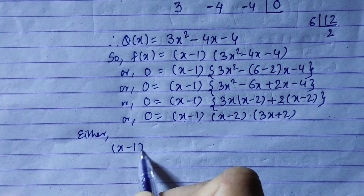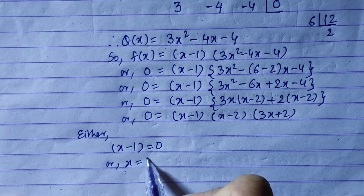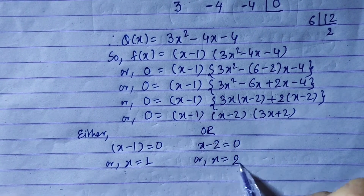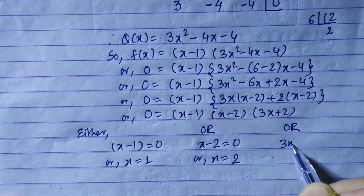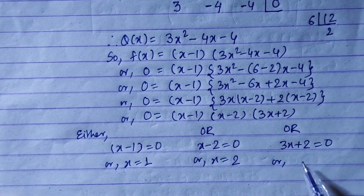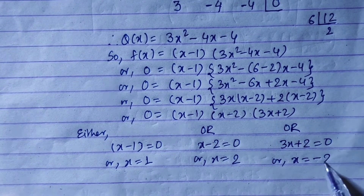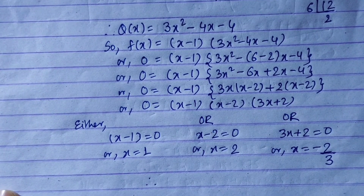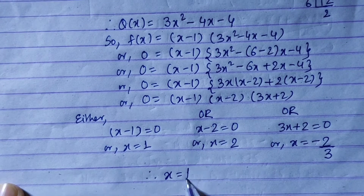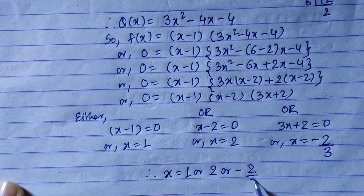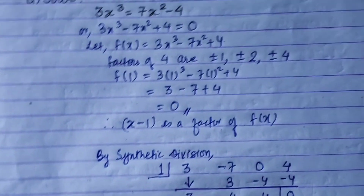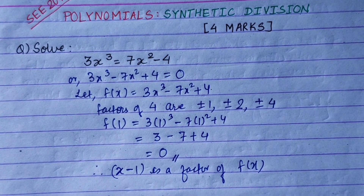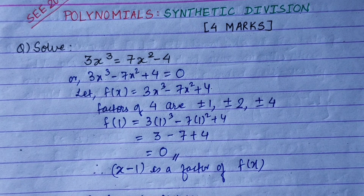Solving each: x - 1 = 0 gives x = 1; x - 2 = 0 gives x = 2; 3x + 2 = 0 gives x = -2/3. Therefore the solutions are x = 1, x = 2, or x = -2/3. This is the solution. Thank you.